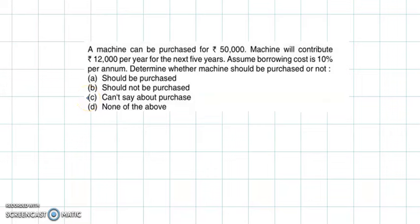Hello and welcome back. We now discuss an example from time value of money. The question is: a machine can be purchased for rupees 50,000. The machine will contribute rupees 12,000 per year for the next five years. Assuming the borrowing cost is 10% per annum, determine whether the machine should be purchased or not.